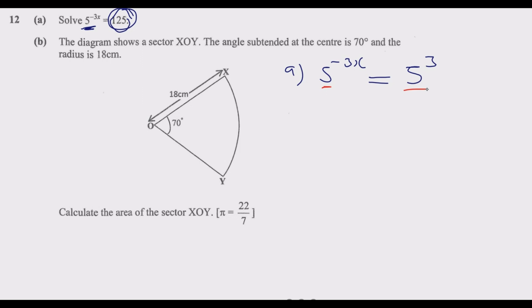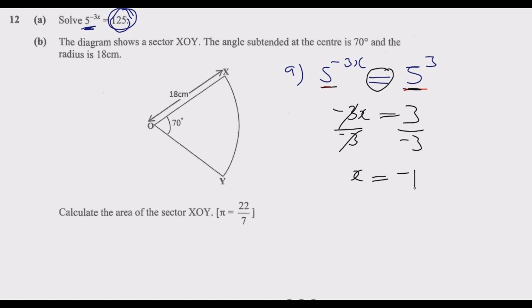Now the bases are the same on both sides, so the powers must also be equal. At this point we say negative 3x equals 3. As long as the bases are the same, the powers must match for the equation to hold. Dividing both sides by negative 3, x equals negative 1. If you substitute x = negative 1, you get negative 3 times negative 1 which is positive 3, confirming the answer. So x equals negative 1.